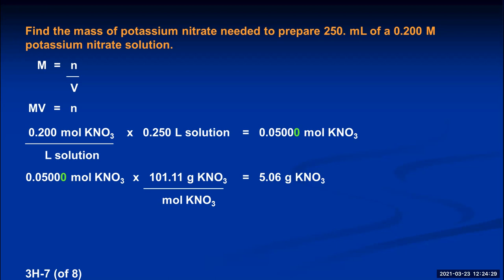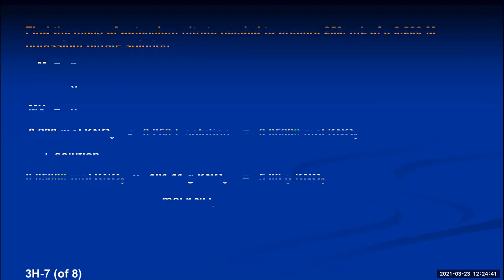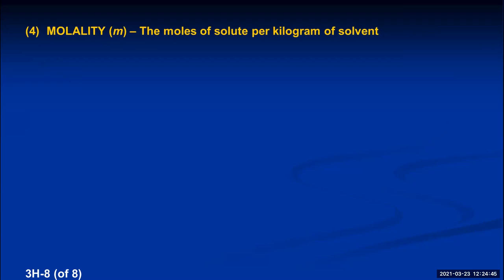The final concentration unit is molality, abbreviated by an italicized lowercase m. It's in italics because a non-italicized lowercase m stands for mass in many physics equations. Molality is defined as moles of solute per kilogram of solvent. Two unique things: it's still moles of solute, but it's per kilogram of solvent — not solution. This is the only one of our four concentration units based on the amount of solvent rather than solution.